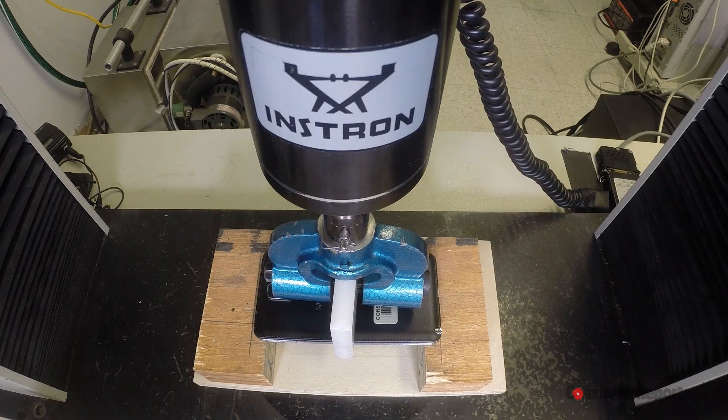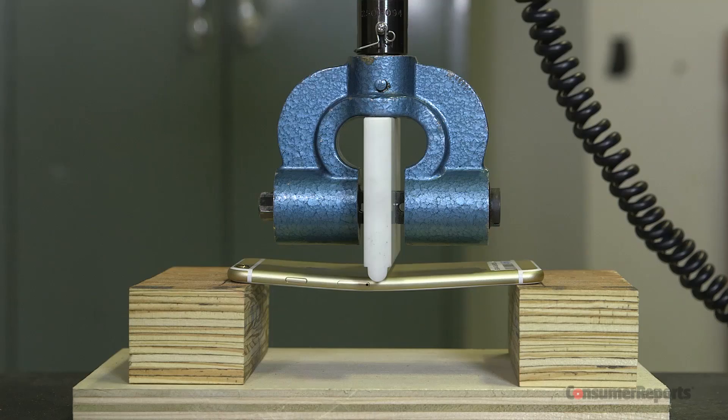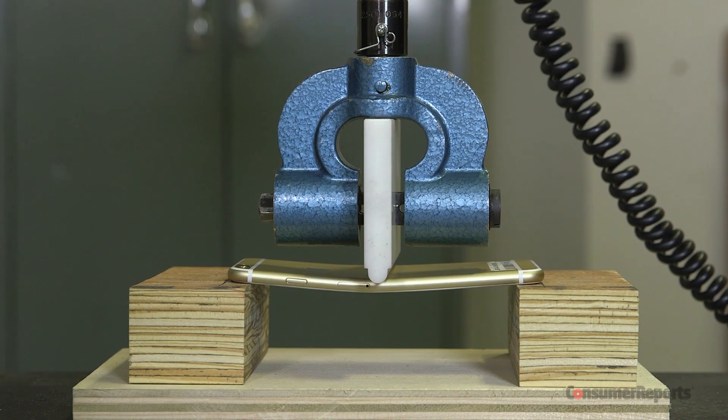We used what's called an Instron Compression Test Machine. We started at 10 pounds of force for 30 seconds, then released. Then we upped the force in 10-pound increments and noted when the phones first began to deform.